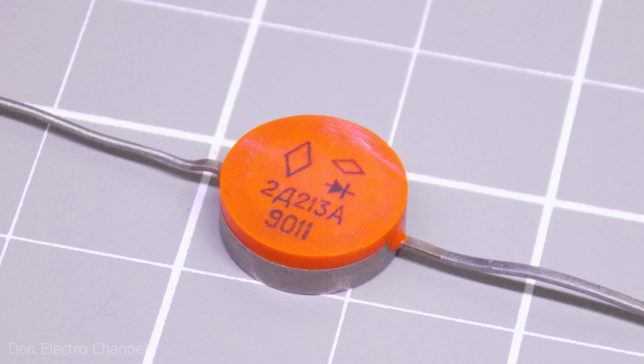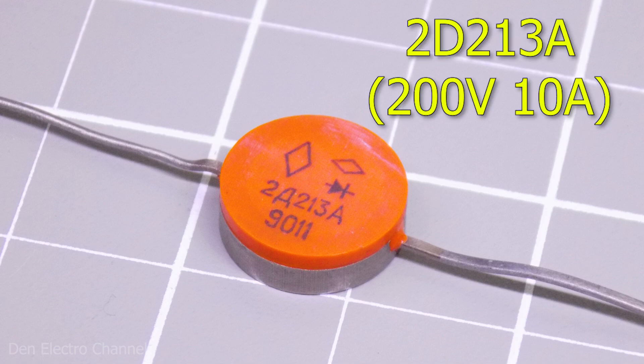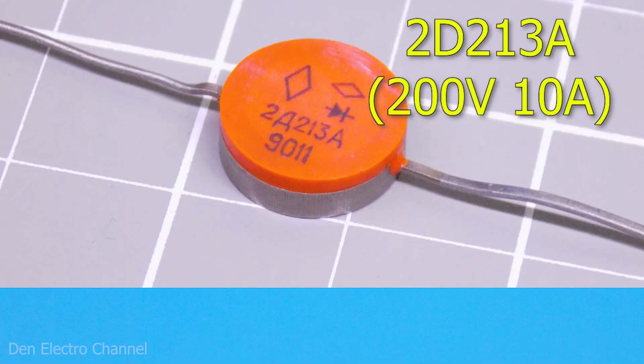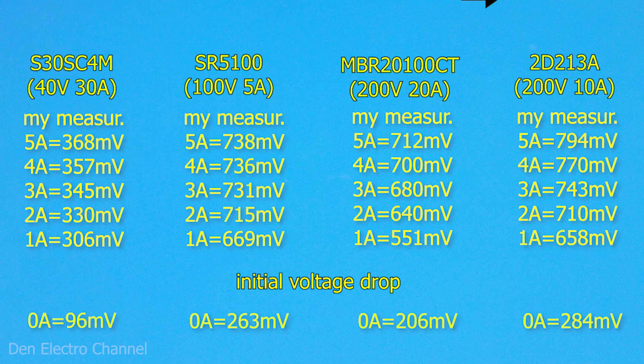The drop on silicon diodes is even greater. Let's look at the Soviet diode 2D213A. It can withstand a voltage of 200 volts and a current of 10 amps. Here are the results of its test.